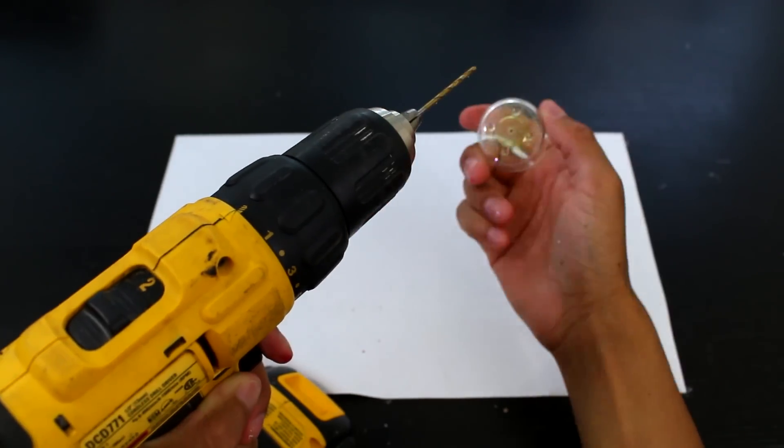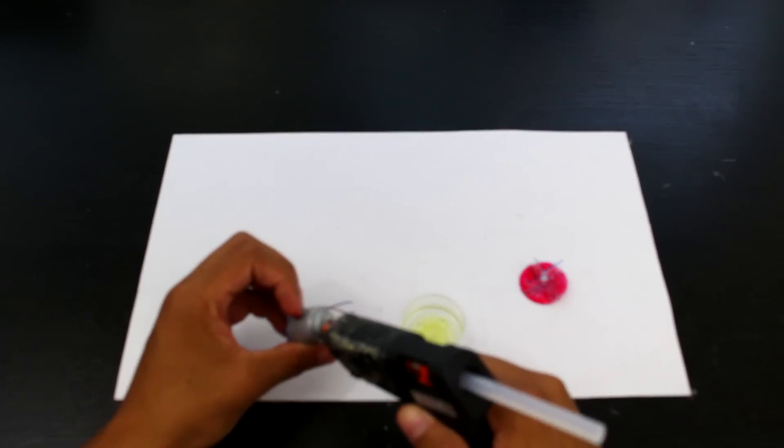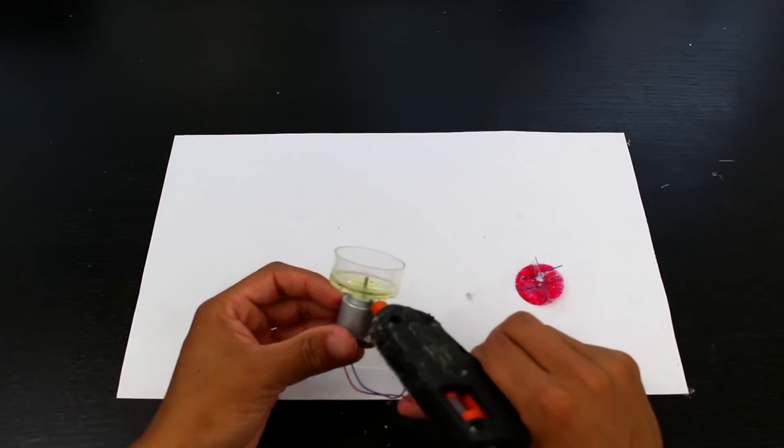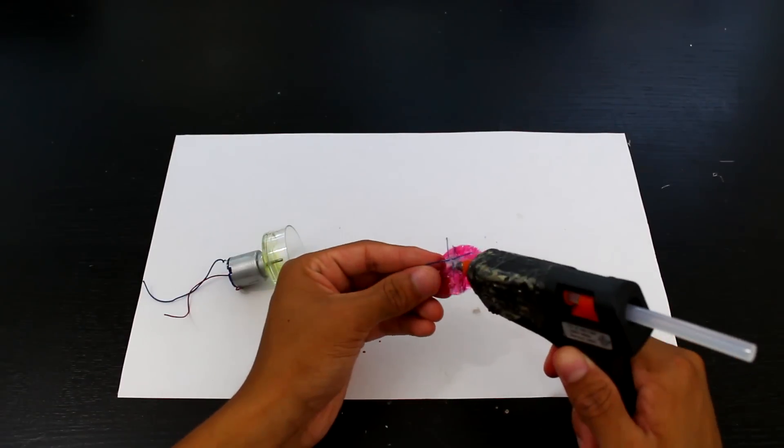Once that's done, we can drill a hole in the bottom of our candle container so that the motor can fit through. And then we'll put some glue around the motor to attach it on. And as you can see, the motor shaft fits through the hole we just drilled. And then we'll seal it off to make sure it's airtight.